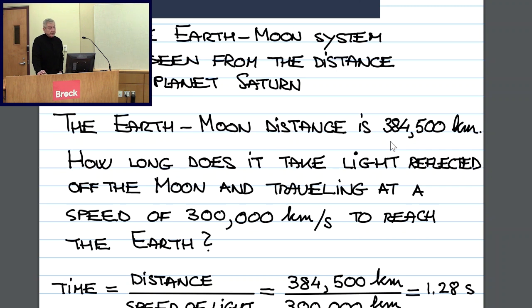Okay, so the time of the trip is then the distance between us and the Moon, which is 384,500 kilometers, over the speed of light in a vacuum, which is 300,000 kilometers per second. And you can see, without doing any calculations in detail, that it's just going to be over a second. You get about 1.3 seconds.